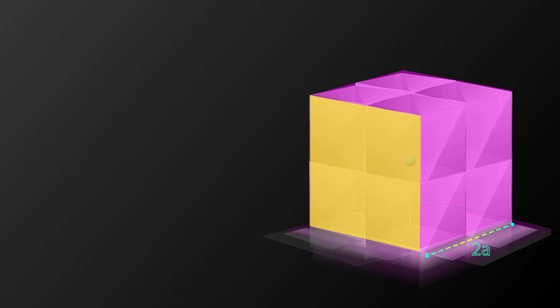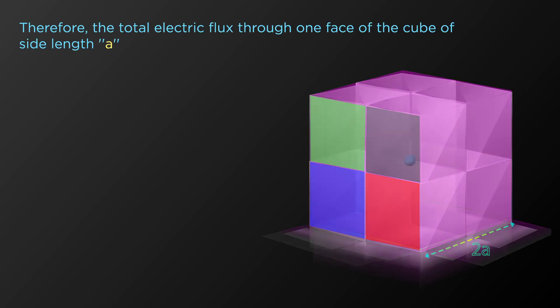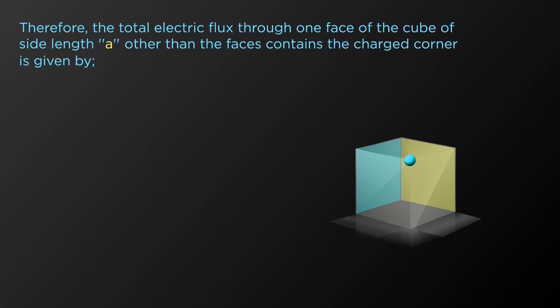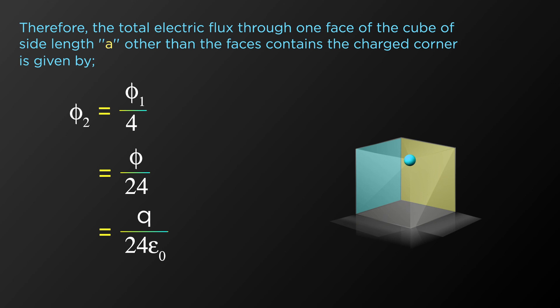Each face of the cube of side length 2A contains four faces of the cube of side length A. Therefore, the electric flux through one face of the small cube of side A, other than the faces containing the charge corner, is Φ₂ = Φ₁ / 4 = Φ / 24. Since Φ = Q / ε₀, we get Φ₂ = Q / (24ε₀). This is the electric flux through each of the other cube faces.